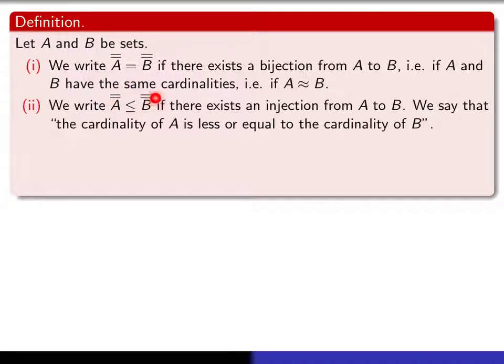We're going to use this notation if there exists an injection from A to B. And in that case, we're going to express this by saying the cardinality of A is less or equal to the cardinality of B.